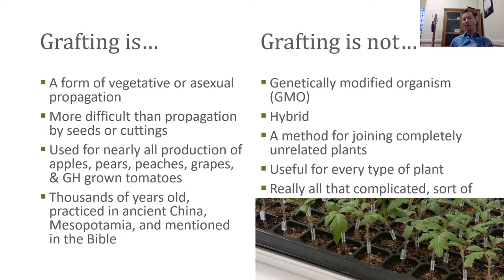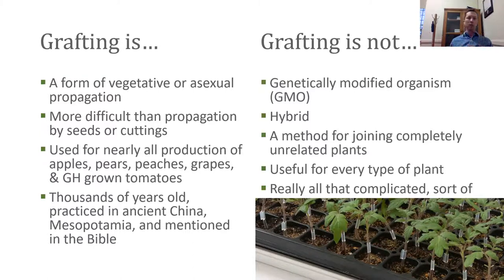Grafting is not a method for joining completely unrelated plants. I always get the question — can you graft a pine tree on an oak tree? No. Can you graft a tomato on a watermelon? No. But there are some different types of plants that we can graft that we might not realize we can. Grafting is also not useful for every type of plant — strawberries, for example, would not be a good plant to graft. But it works for a lot of the vegetables that we produce.